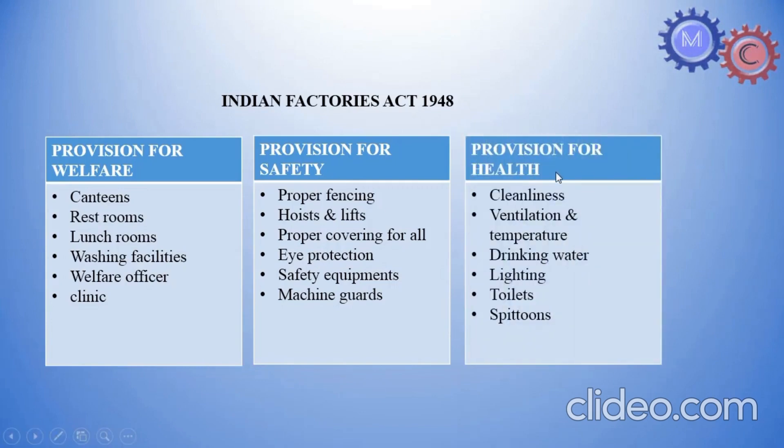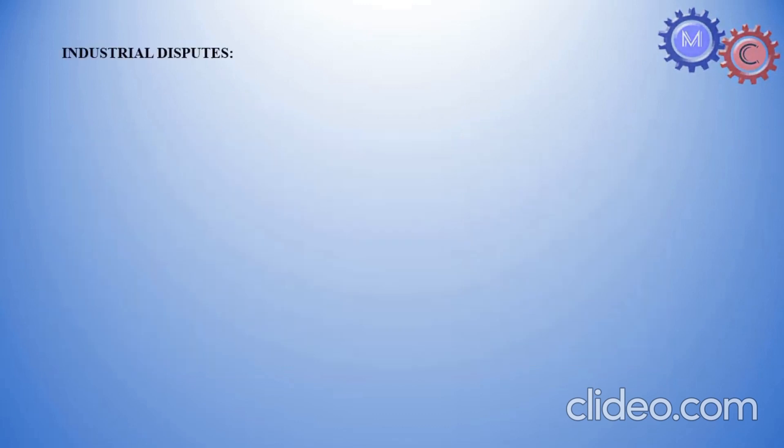Provision for health. Plastic cleanliness, housekeeping. When we work, housekeeping, we need to clean floor machines. Ventilation and temperature. We need a refrigeration system properly, air conditioning system. Drinking water, water cleaner. Lighting. Toilets cleaner. Spittoons. It should be good.